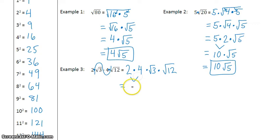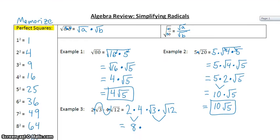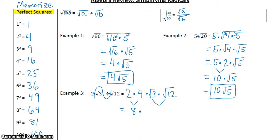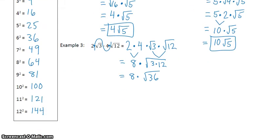Now I can take 2 times 4 to get 8. For the square root of 3 times the square root of 12, I can go the other way and rewrite it as 1 square root: the square root of 3 times 12, which turns into 8 times the square root of 36. And 36 is a perfect square — the square root of 36 is 6 — so 8 times 6 is 48.